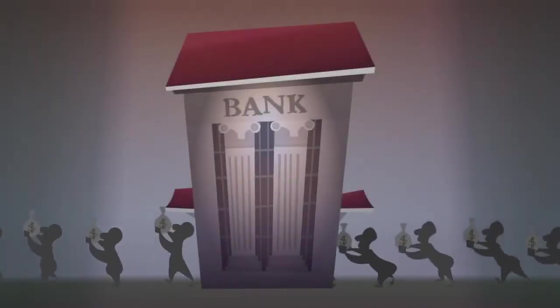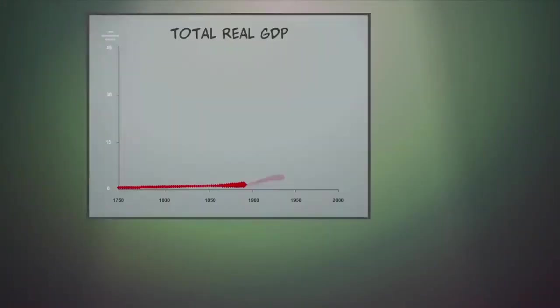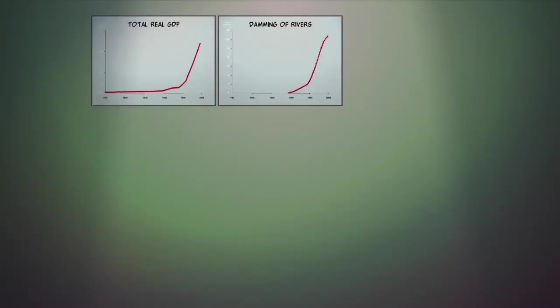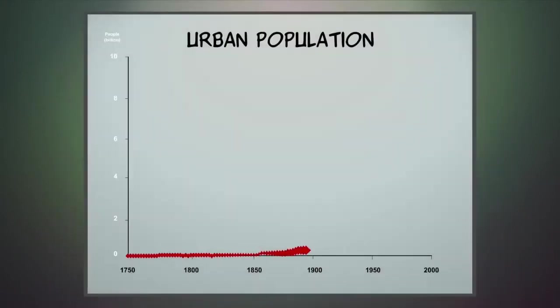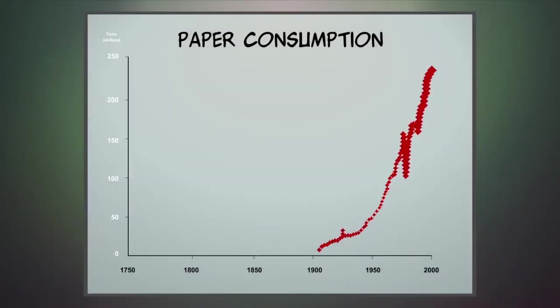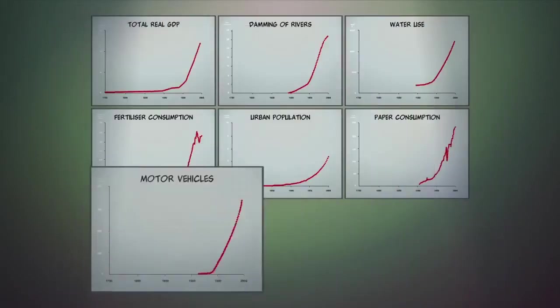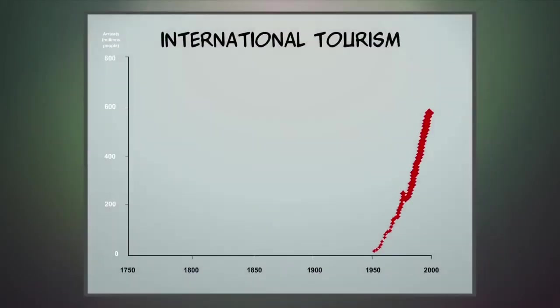Partly through this debt system, the effects of economic growth have been spectacular, in GDP, damming of rivers, water use, fertilizer consumption, urban population, paper consumption, motor vehicles, communications and tourism.